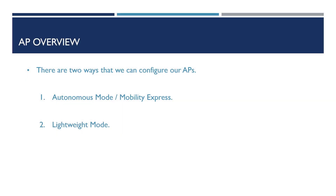There are two ways that we can run our APs within our network, depending on the firmware we run on it. These are autonomous mode and lightweight mode. Autonomous mode, now also called Mobility Express, is used when you don't have a wireless LAN controller within your environment. Autonomous APs are configured one by one and are best for extremely small deployments. Configuring numerous APs and keeping the configuration in sync across multiple devices can be extremely difficult.